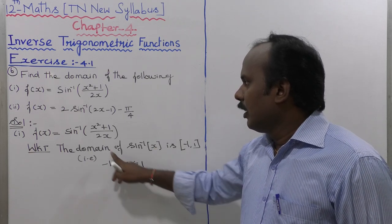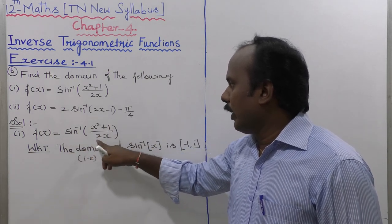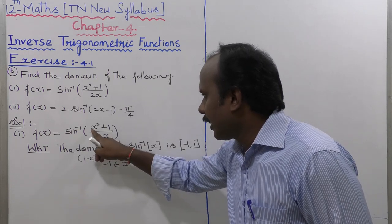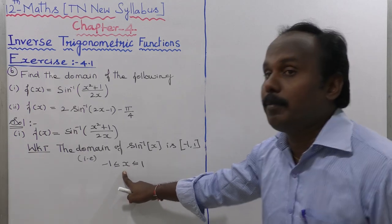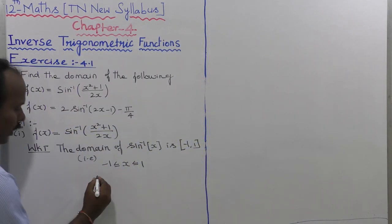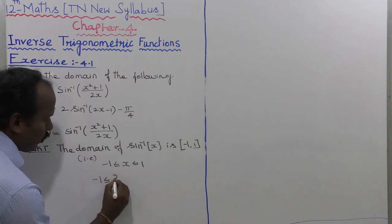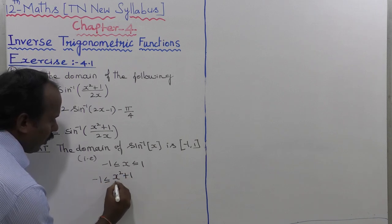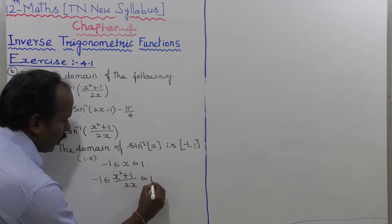For the given function sin inverse of (x squared plus 1) divided by 2x, x is replaced by (x squared plus 1) divided by 2x. So we get: minus 1 less than or equal to (x squared plus 1) divided by 2x is less than or equal to 1.